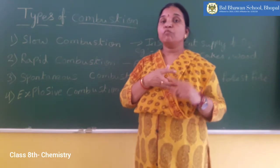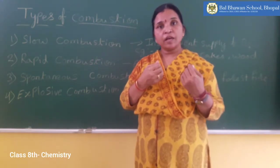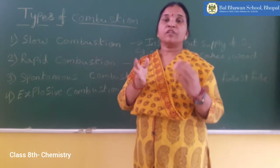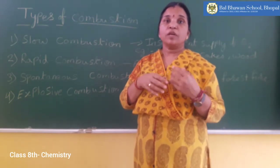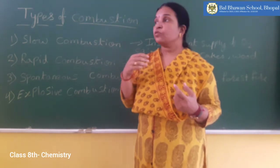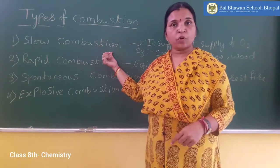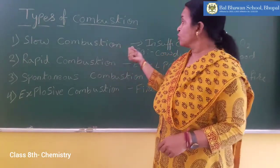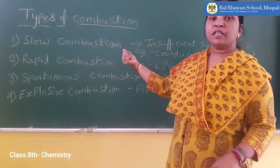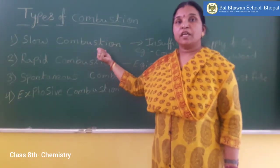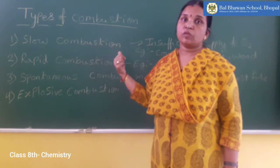Most of the combustible material will turn into unburned carbon particles without getting burned. This process is very slow, because of the insufficient supply of oxygen. In such cases we find that carbon monoxide is also produced, which is one of the harmful gases produced due to combustion.